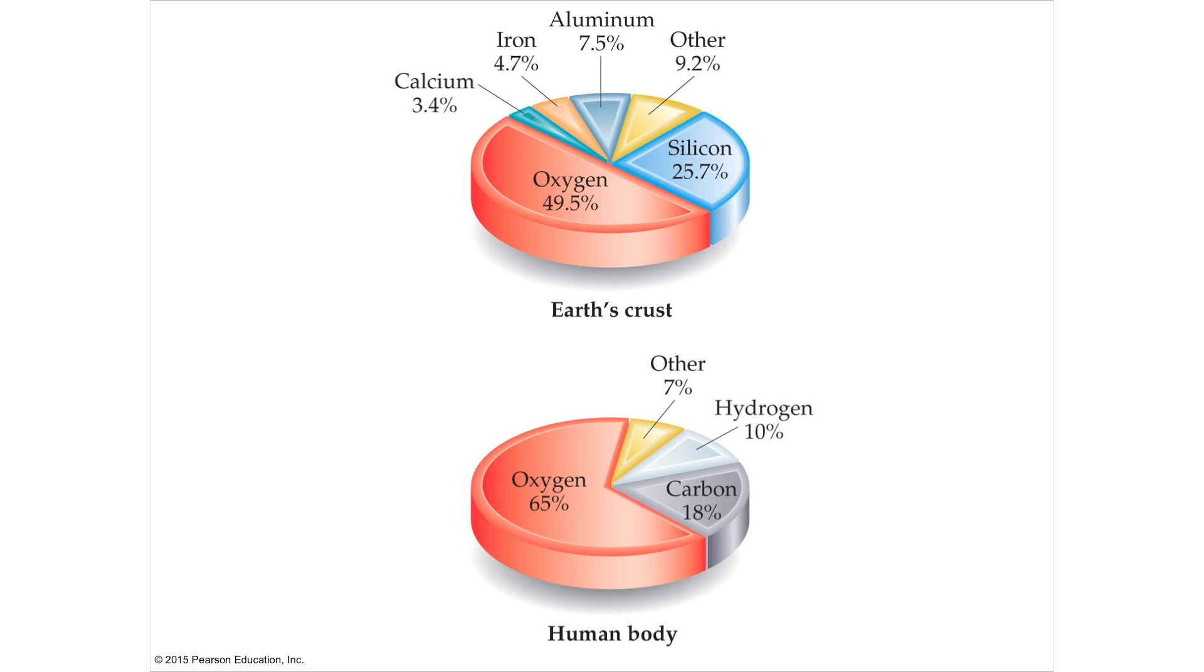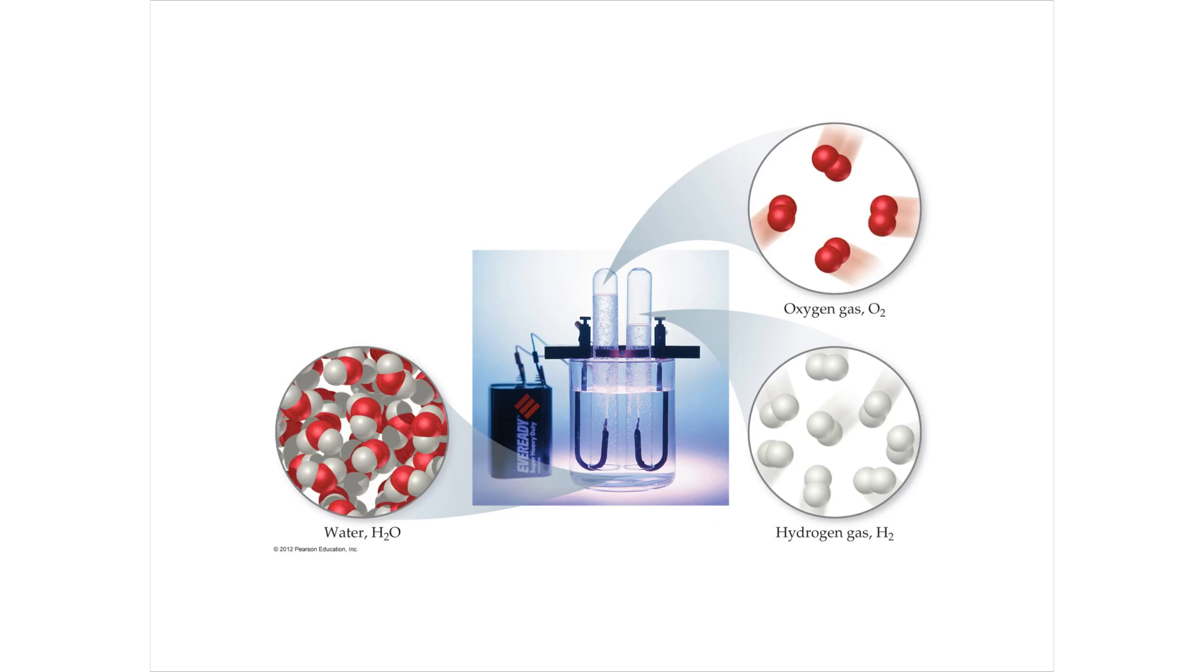A compound can also be broken apart back into its elements. So for instance, this is an example of electrolysis. You've got water here and water is H2O. So on the left, you can see the molecules of H2O. And if you were to have a platinum electrode attached to some kind of a power source, like a battery, you could break the water down into the component gases.